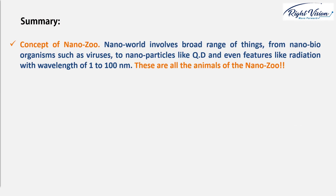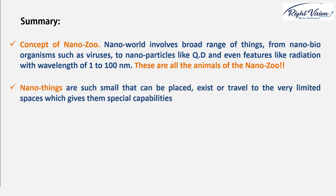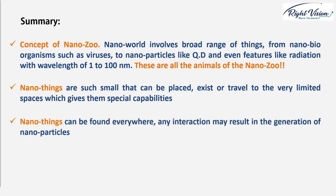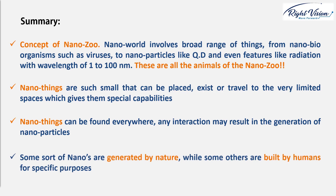So to put this lecture in a nutshell, I talked about the concept of the nano zoo. Once we attribute the nanoworld to the space of 1 to 100 nanometers, a broad range of things are included — from nano-bio organisms such as viruses, to nanoparticles such as quantum dots, and even features like radiation with wavelengths of 1 to 100 nanometers. These are all the animals of the nano zoo. Nano-things are so small that they can exist or travel in very limited spaces, which gives them special capabilities. Nano-things can be found everywhere, and any interaction may result in the generation of nanomaterials. Some nano-things are generated by nature while some others are built by humans for a specific purpose. Thanks for your attention. See you in the next lesson.